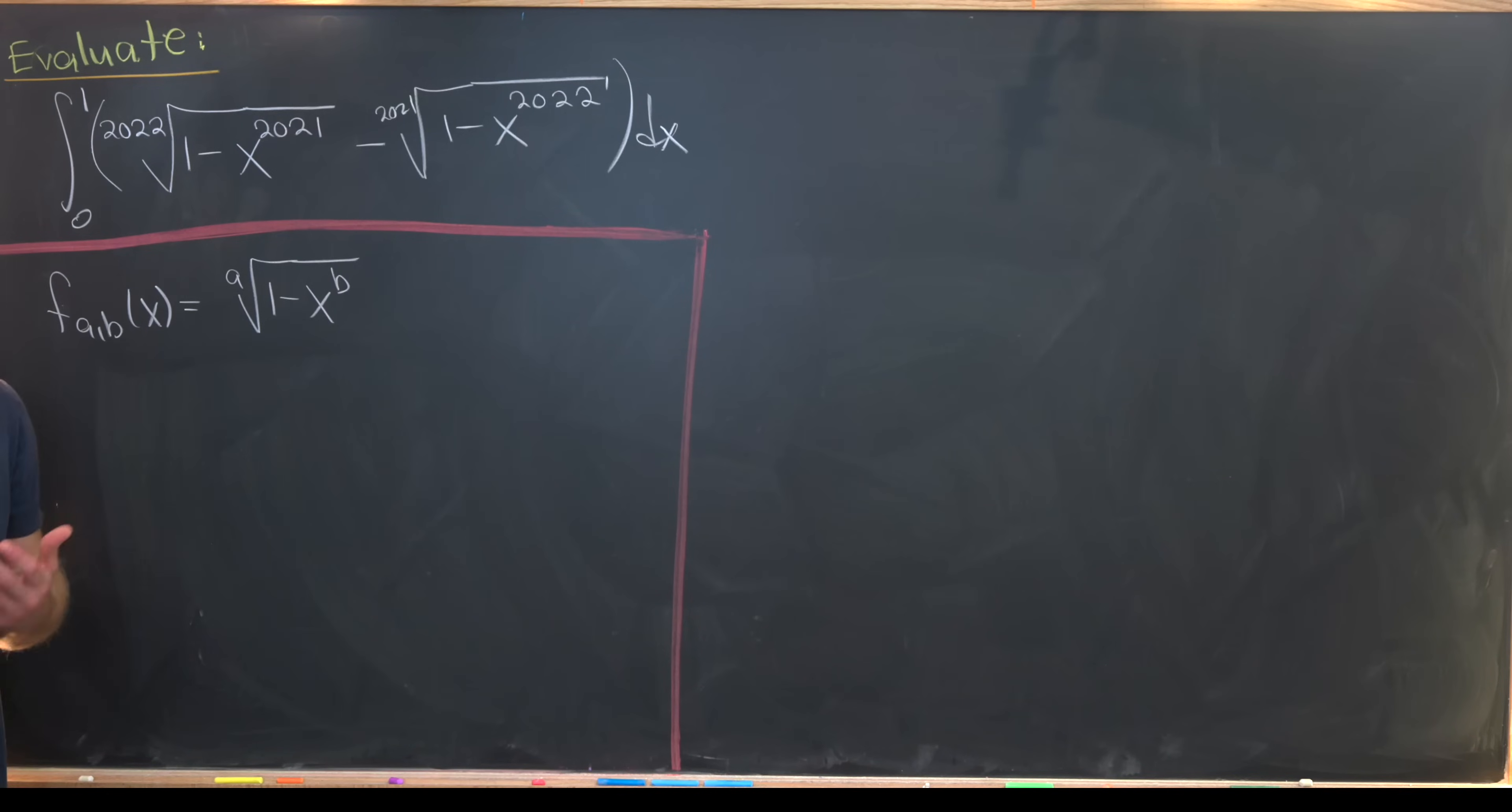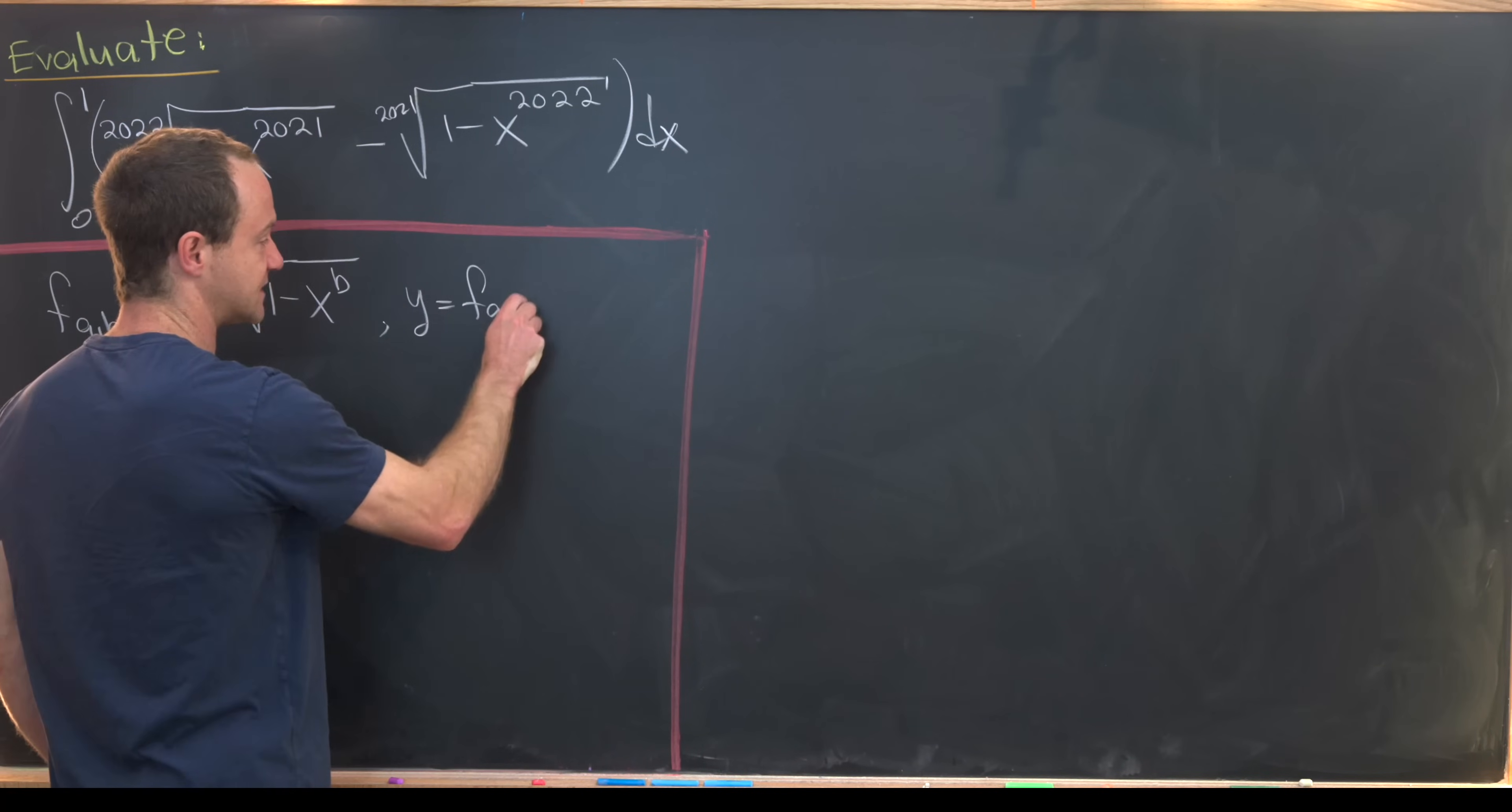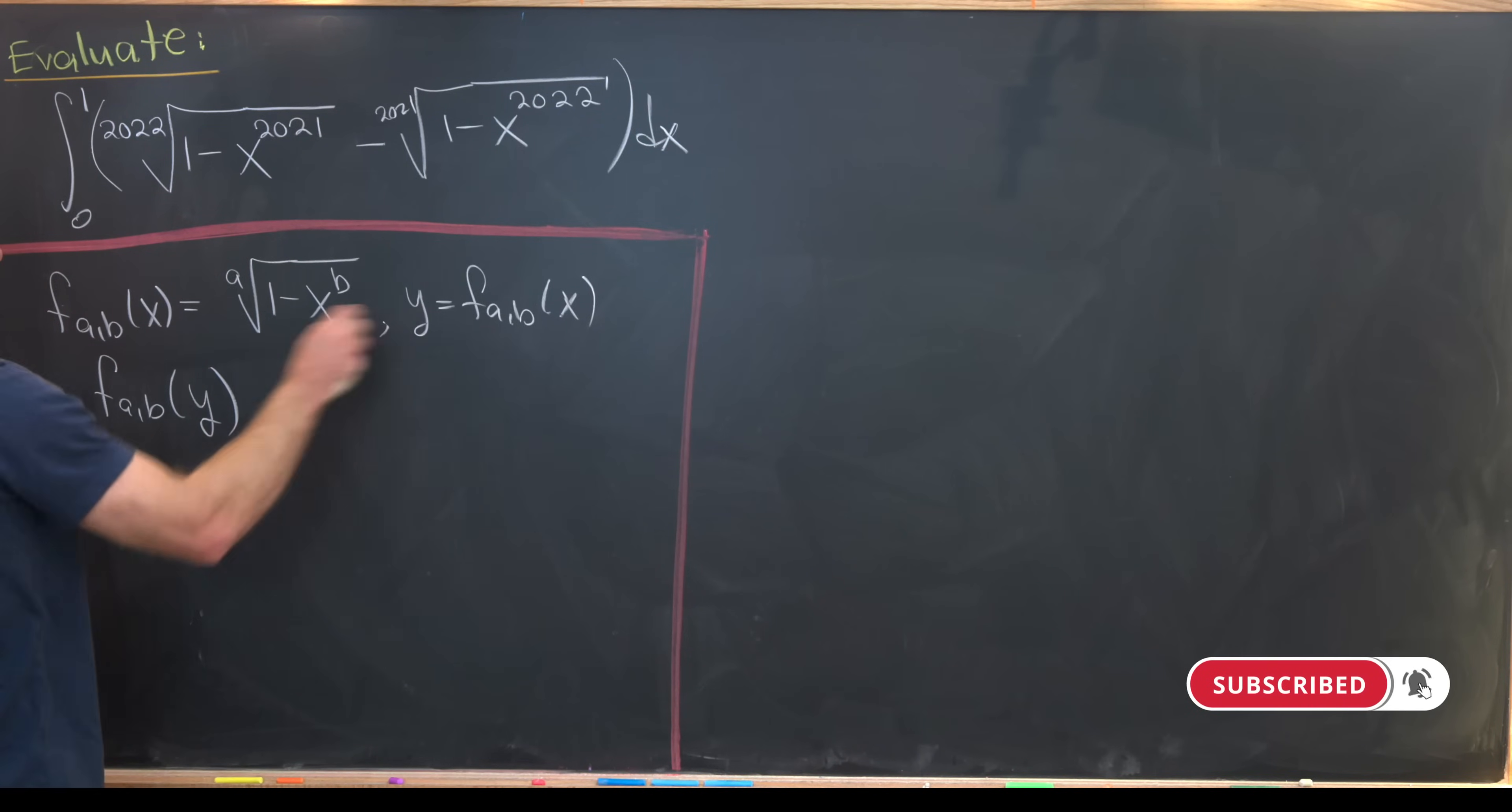I'm going to take a standard precalculus approach. I'll set y equal to f sub ab of x, and then I'll switch x and y, meaning that x is equal to f sub ab of y, and then I'll solve for y, and that'll be my value of f ab inverse.